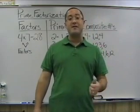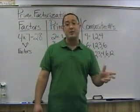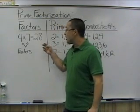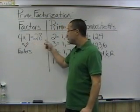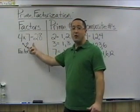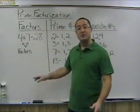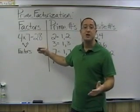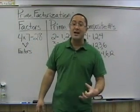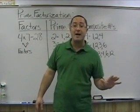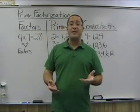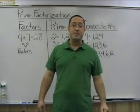First we need to make sure that we understand factors, prime numbers, and composite numbers in order to do prime factorization. Factors are the numbers that you multiply together to make another number. For example, 4 times 7 equals 28 — 4 and 7 are factors, and 28 is the product. Another way to view factors is through division: any number you can divide into another without a remainder is a factor. So 5 is a factor of 10 because 10 divided by 5 is 2 with no remainder.